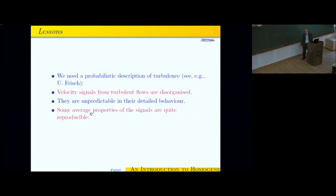The lessons that we learn from various experiments and numerical simulations is that we really need a probabilistic description of turbulence. You can see this enunciated clearly in the book by Uriel Frisch. Basically velocity signals from a turbulent flow are disorganized. They are unpredictable in their detailed behavior. But if you look at some average properties of these velocity signals, they are reproducible from experiment to experiment.